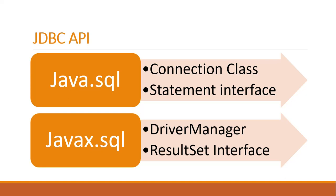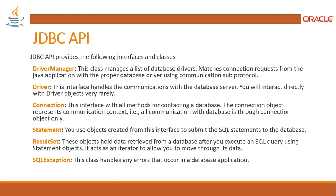There are some commonly and popularly used classes and interfaces, such as Connection for establishing a connection to the database, and Statement for executing SQL statements. The most important ones are DriverManager, Driver, Connection, Statement, ResultSet, and SQLException — these are the most commonly used and important interfaces and classes in the JDBC API.